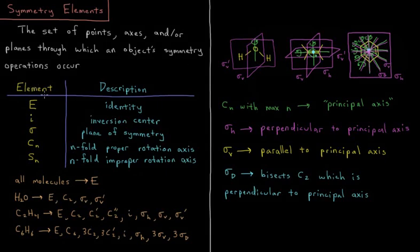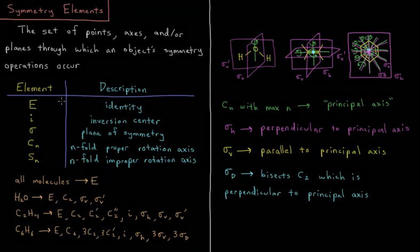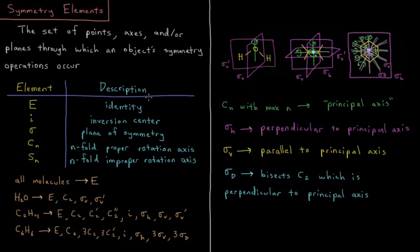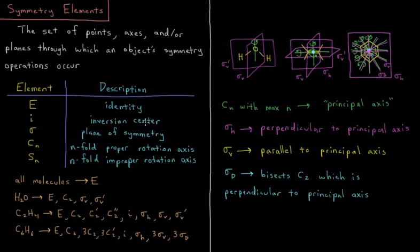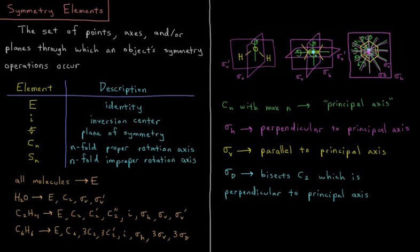For a given molecule, the identity operation is to do nothing, and the element is called the identity element. The inversion operation occurs through the symmetry element, the inversion center. The reflection operation occurs through the sigma plane of symmetry element. The proper rotation operation occurs through an n-fold proper rotation axis, and the improper rotation operation occurs through an n-fold improper rotation axis.